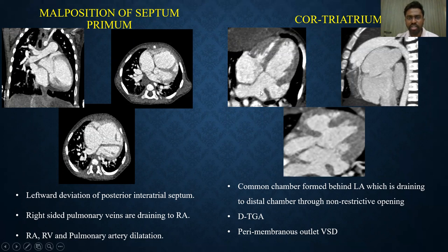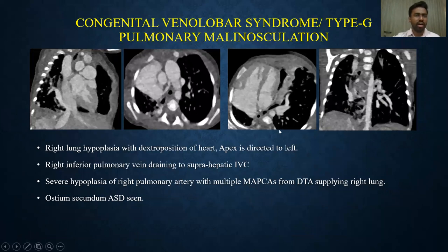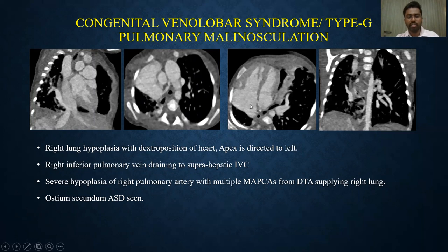In the case of cor triatriatum, all pulmonary veins joined to form a common chamber behind the left atrium. This common chamber drained into the distal chamber through a non-restrictive opening, suggestive of Loeffler's type III cor triatriatum. This patient also had DTGA, in which the aorta was seen anterior and to the right of the pulmonary artery, and a perimembranous outlet VSD was also seen. In the congenital venolobar syndrome, this was a type G pulmonary malosculation with all three components: inferior pulmonary vein draining into the suprahepatic IVC, right lung hypoplasia, and hypoplastic pulmonary artery. This patient also had ostium secundum ASD.